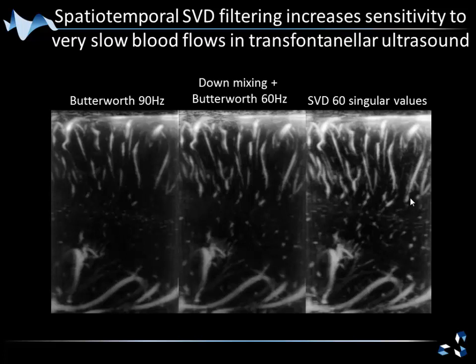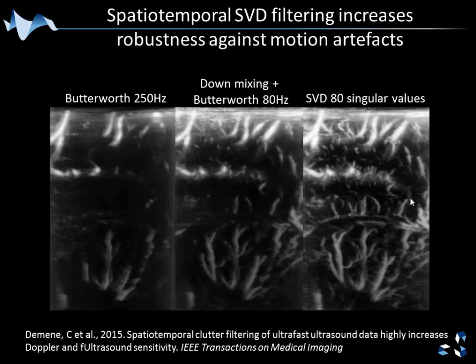This is also interesting for clinical applications, shown here on a human neonate brain. When the baby is still, we don't have much motion and we are able to detect more vessels and smaller vessels. But the difference becomes really dramatic when motion artifacts occur — when the baby moves during acquisition, we have to increase the cutoff frequency of the filter to remove tissue, so we don't see anything. Whereas with the SVD filter, we still have all the small vessels visible in the brain.